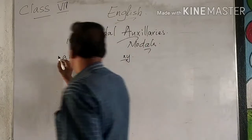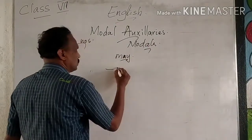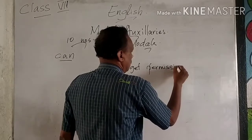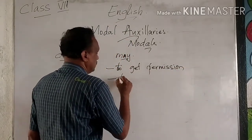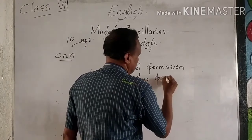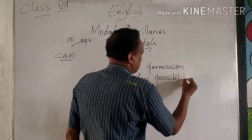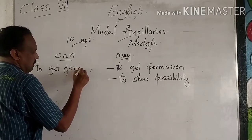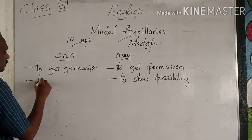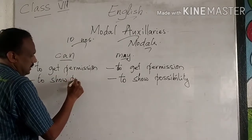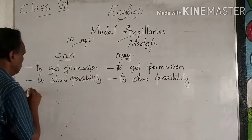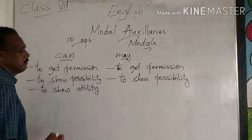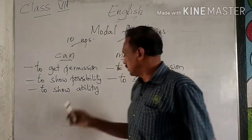Can and may are more or less the same in some uses. May is used to get permission and also to show possibility. Similarly, can is also used to get permission and to show possibility, and additionally to show ability.